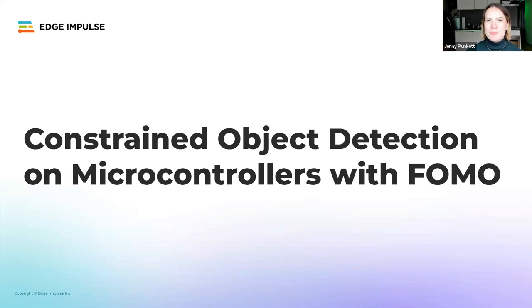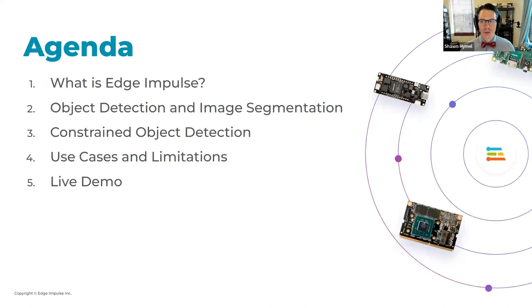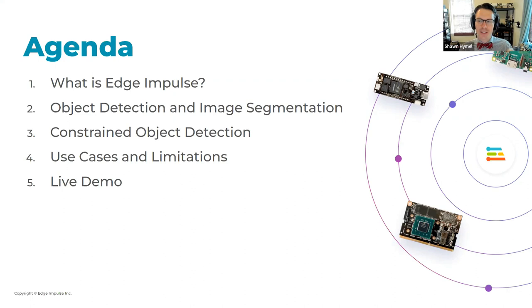Thank you, Jenny. We're talking about constrained object detection, which is a little different than object detection if you're familiar with working in computer vision. I'm not going to reveal what FOMO means quite yet until we get towards the end. We'll cover an introduction to Edge Impulse, object detection and image segmentation, constrained object detection, use cases, how to get FOMO to work best, limitations, and a brief demo using the OpenMV cam showing face detection running in real time.